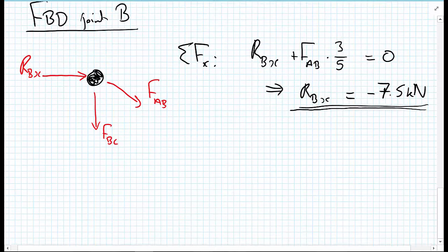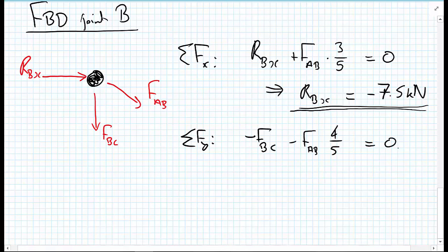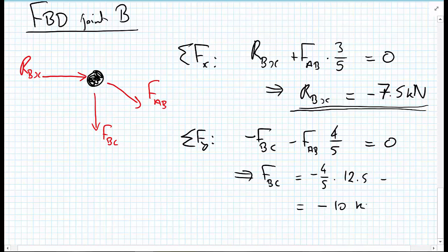For the sum of forces in the Y direction at joint B: −FBC − FAB × (4/5) = 0. Rearranging and substituting FAB = 12.5 gives FBC = −(4/5) × 12.5 = −10 kilonewtons. This means FBC is in compression, pushing towards the joint at B.